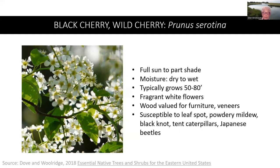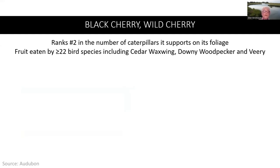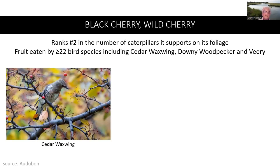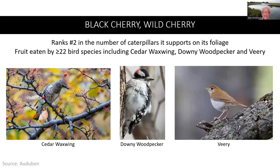Wild cherry is an important source of summer berries. It typically grows 50 to 80 feet and has fragrant white flowers. The wood is valued for furniture veneers. However, it is susceptible to leaf spot, powdery mildew, black knot, tent caterpillars, and Japanese beetles. The black cherry ranks number two in the number of caterpillars it supports on its foliage. The fruit is eaten by more than 22 bird species, including the cedar waxwing, the downy woodpecker, and the veery.